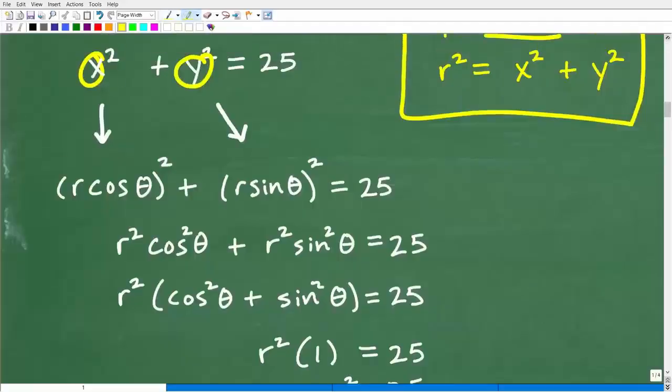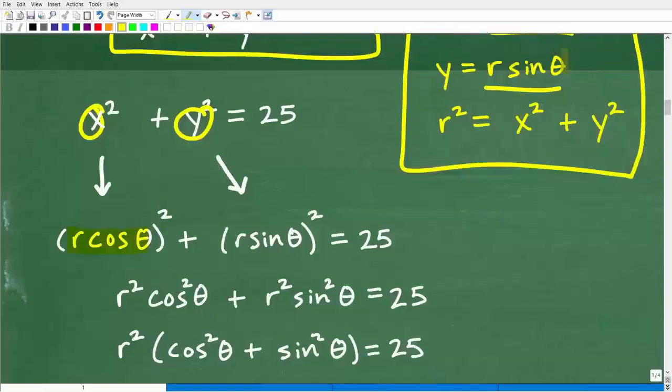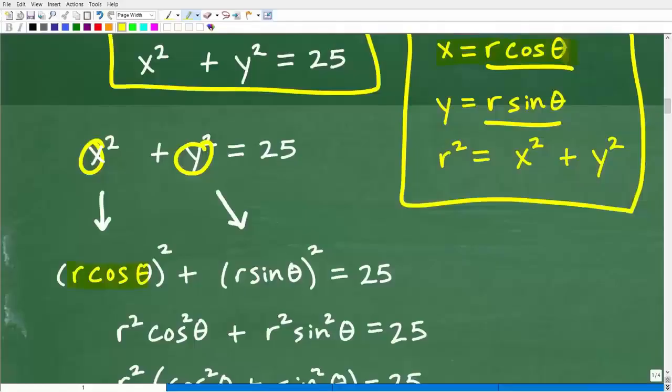So x squared, let me move up here so we can see everything. X squared is the same thing as r cosine theta squared because that is what x is equal to.